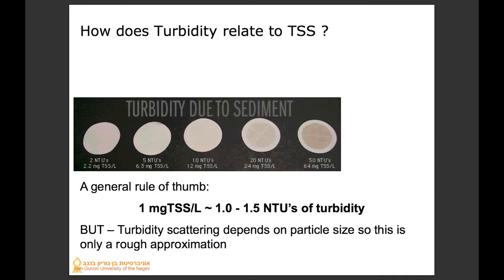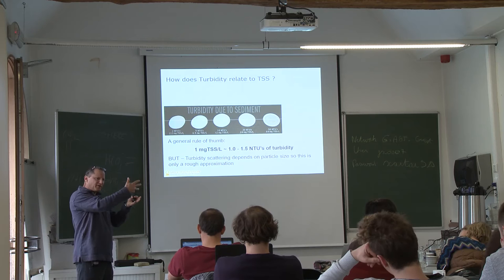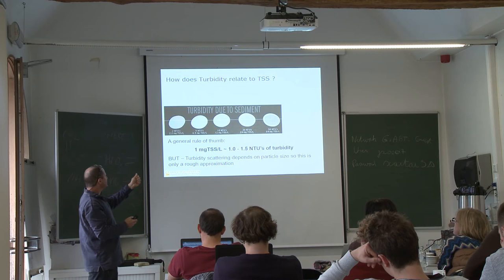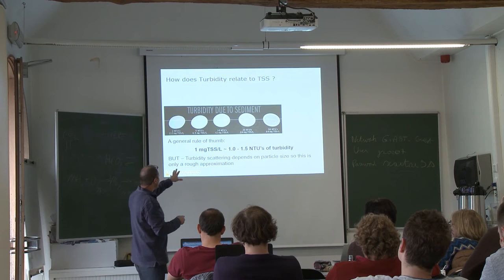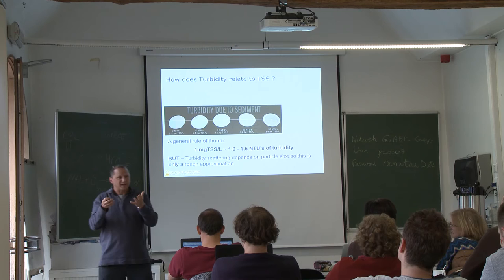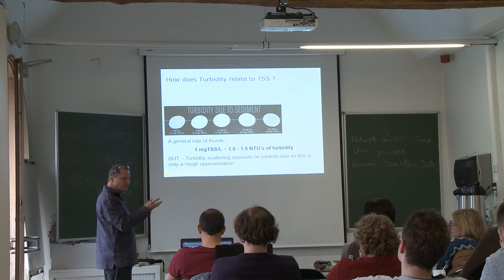We won't do it today because there's no turbidity meter here, but the TSS process we described takes time — you have to weigh the filter, filter the sample, dry it overnight or for four hours, then weigh again. Turbidity is a measure of light scattering through a sample and gives a quick estimate. If there's a correlation between suspended solids and turbidity, it's a much simpler way to analyze TSS — though that correlation doesn't always exist.